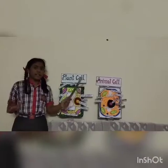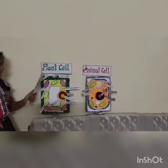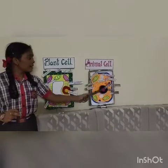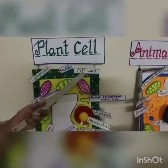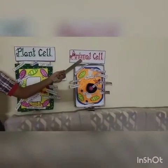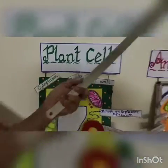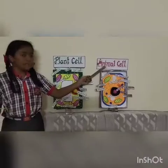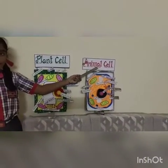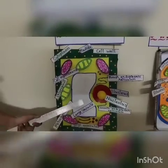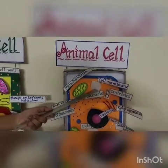Now I am going to tell you all the differences between a plant cell and an animal cell. A plant cell is generally rectangular in shape, whereas an animal cell is generally circular or irregular in shape. A cell wall is present in a plant cell whereas in an animal cell it is absent. In a plant cell, a large vacuole is present in the center, whereas in an animal cell a small vacuole is present but not in the center.